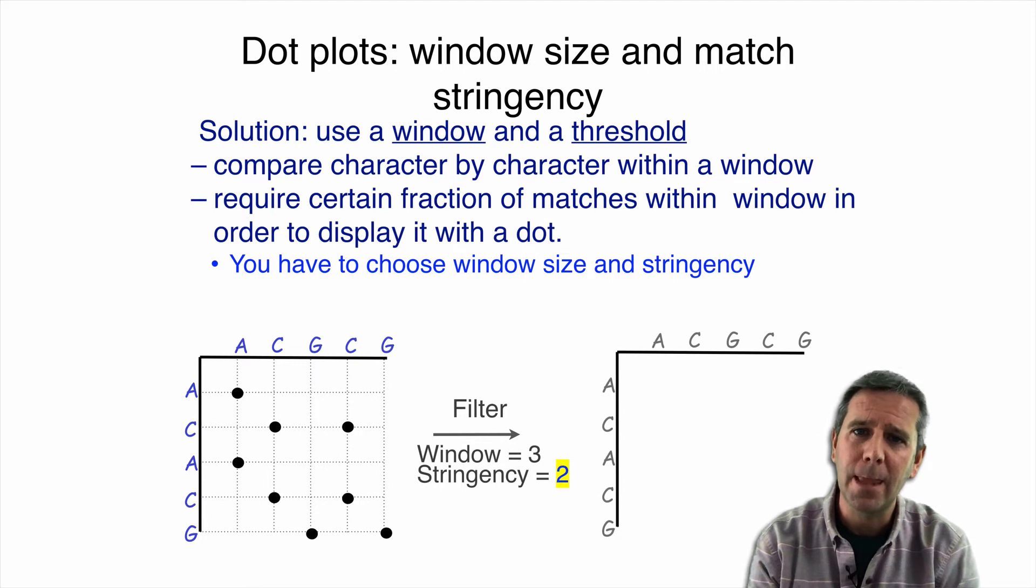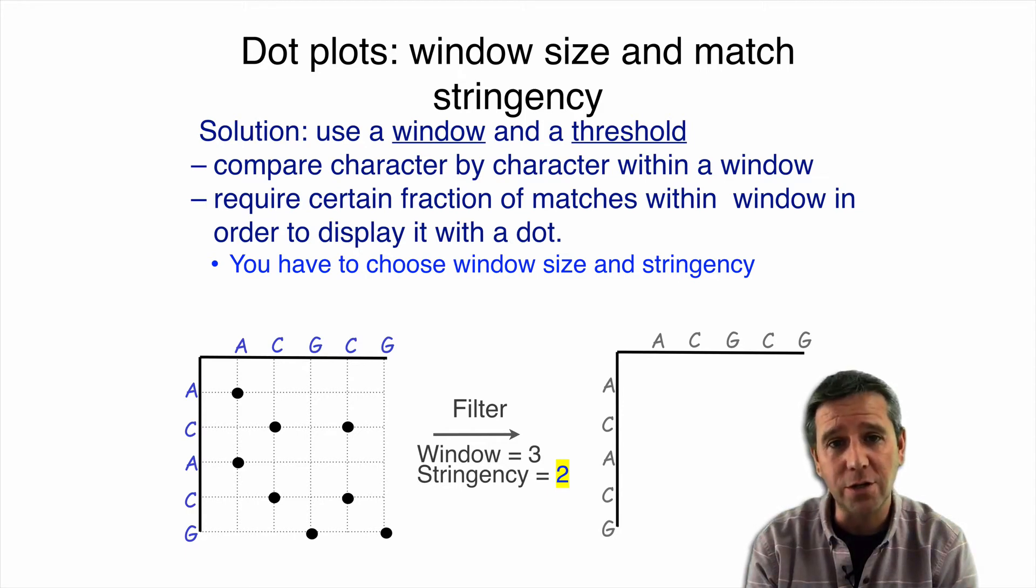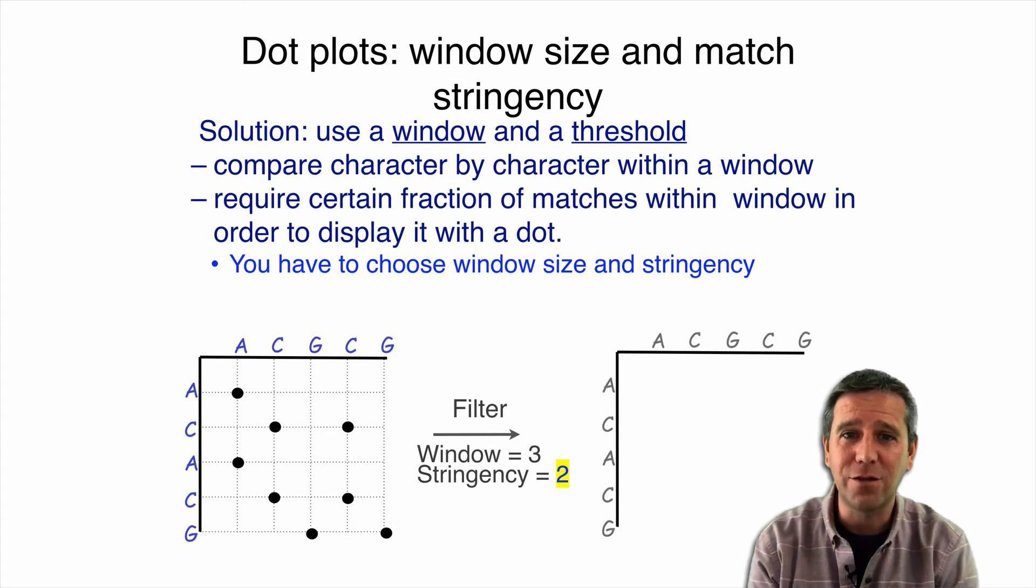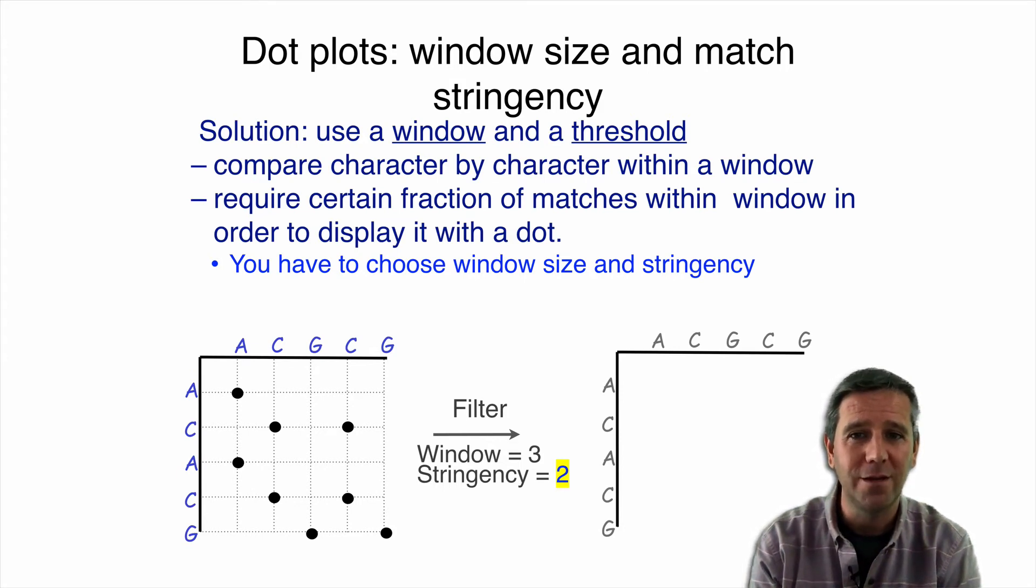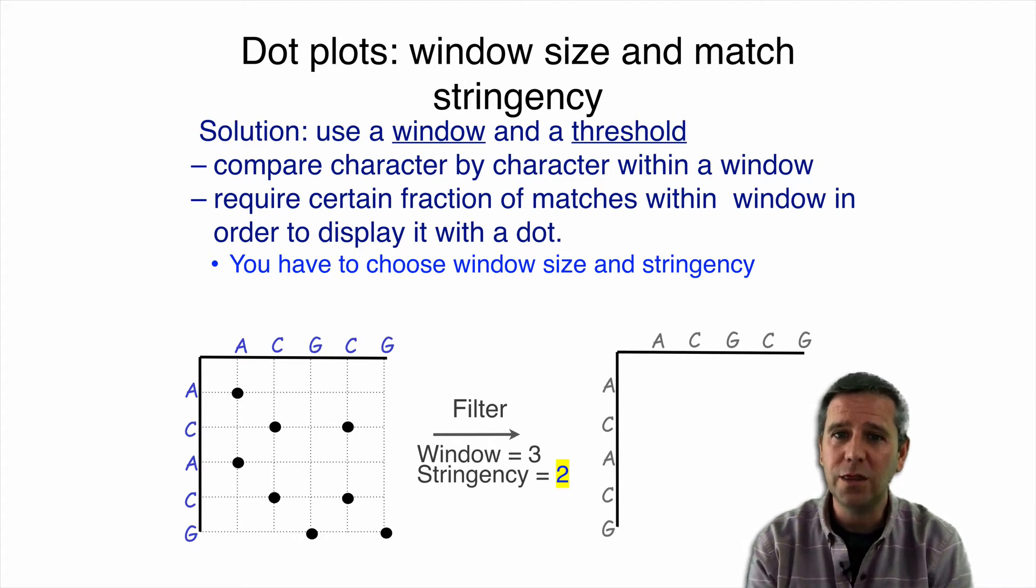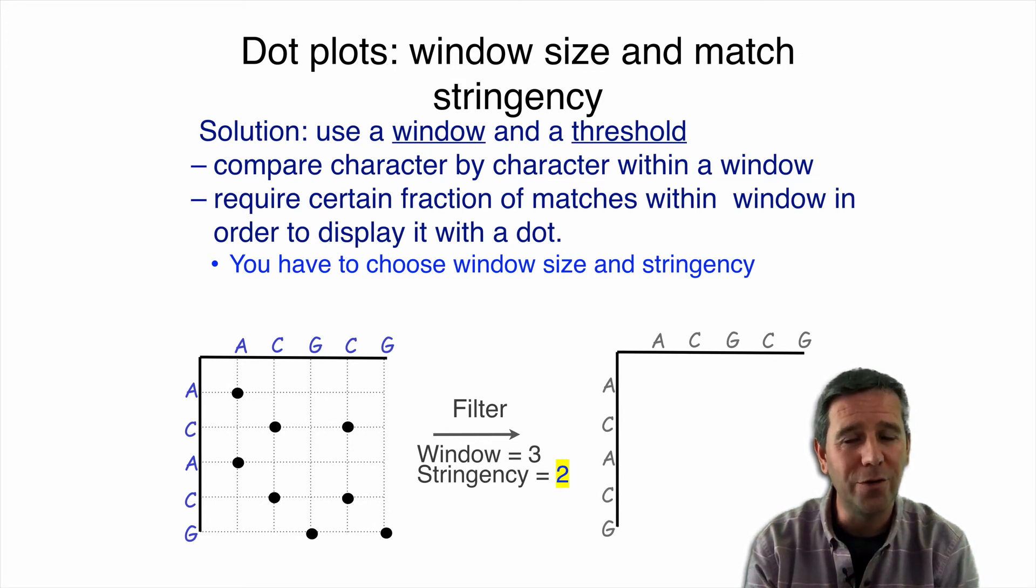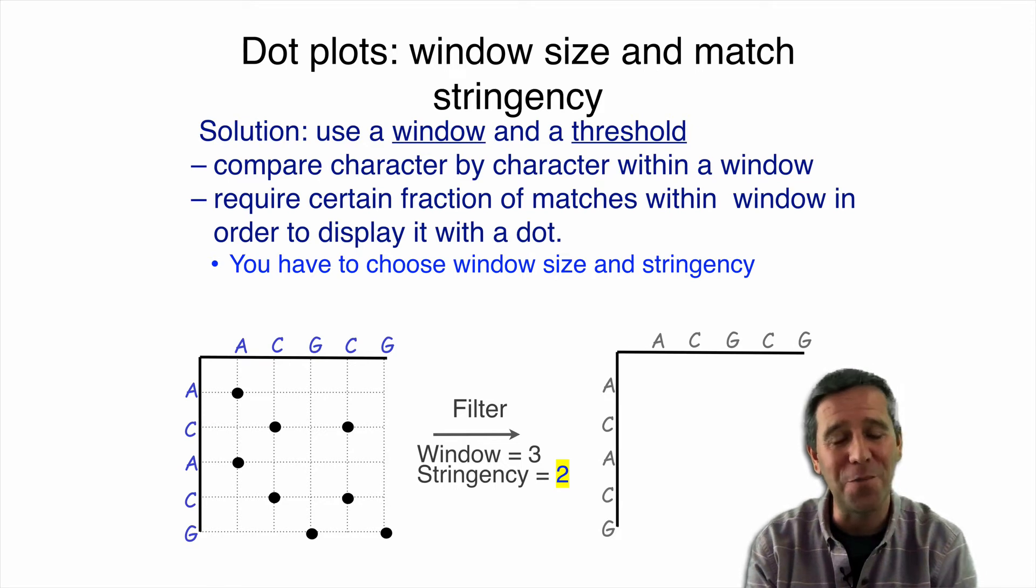Now, that's kind of extreme and we don't have to be so stringent. We can actually reduce our stringency to a lower value. So in this case, let's try a threshold of two. So what this means is that we'll only require two characters within our window pairs to match in order to put a dot in our dot plot matrix. Okay. So that's our stringency of two.